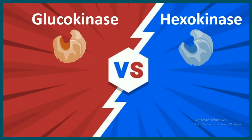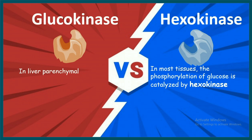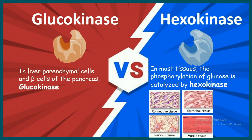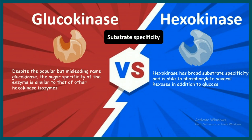Both glucokinase and hexokinase have tissue specificity. In most cases, hexokinase is present in a wide variety of tissues, whereas glucokinase is very specific to liver hepatocytes and pancreatic beta cells. So connective tissue, epithelial tissue, and muscle tissue express hexokinase, whereas liver and pancreatic beta cells express glucokinase.